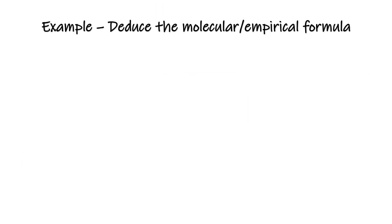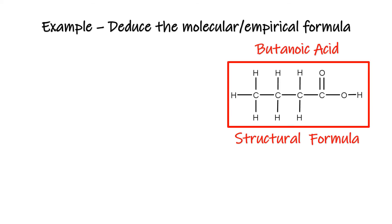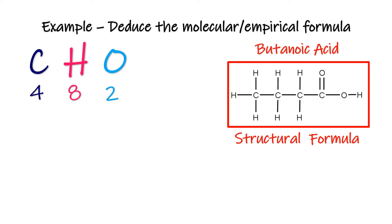Let's have another example to understand how to deduce the molecular and empirical formulas from the structural formula of a compound. The displayed structural formula of butanoic acid shows that the compound consists of three elements: carbon, hydrogen, and oxygen. To deduce the molecular formula, we need to count the number of atoms of each element in the structural formula. Here we have four carbon atoms, eight hydrogen atoms, and two oxygen atoms. Therefore, the molecular formula is C4H8O2.